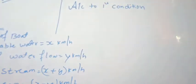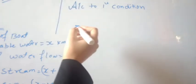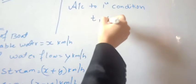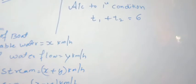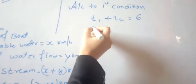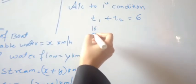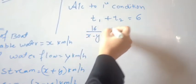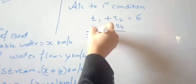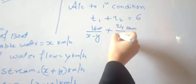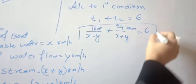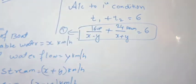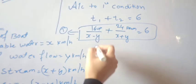According to the first condition, total time T1 plus T2 equals 6 hours. T1 (upstream time) equals 16 divided by (x minus y), and T2 (downstream time) equals 24 divided by (x plus y). So equation 1 is: 16/(x−y) plus 24/(x+y) equals 6.